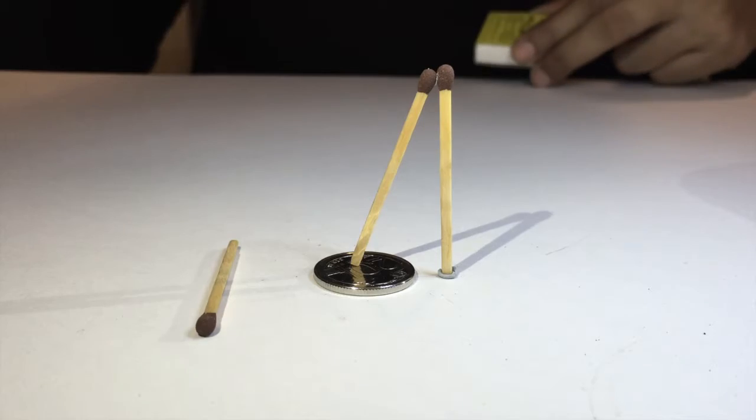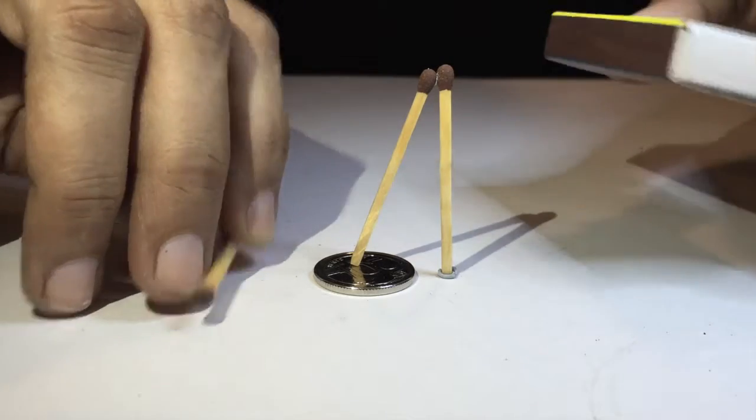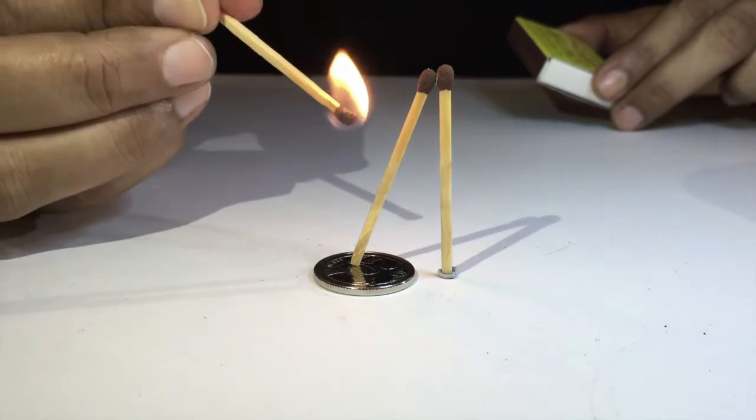Now comes the tricky bit. Light up your third match and burn the leaning match around its center. Watch what happens.